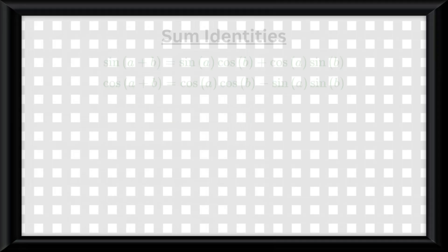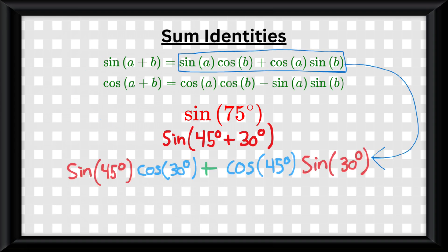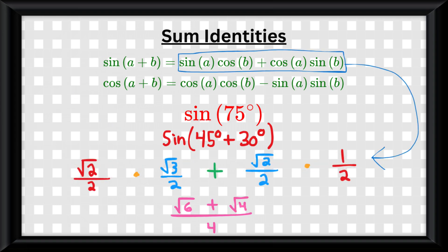Really quick, let me show you how to use the sum identities. If you had an expression like sine of 75 degrees, we can rewrite this as sine of 45 degrees plus 30 degrees. And using the identity, we can plug it into it, then simplify, and we get our fully simplified answer.